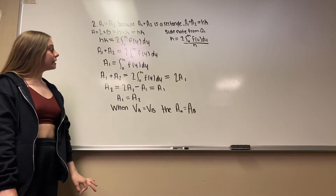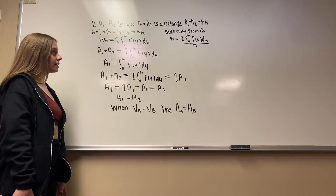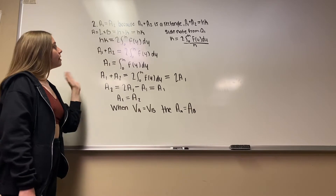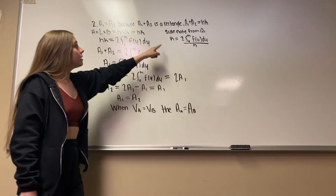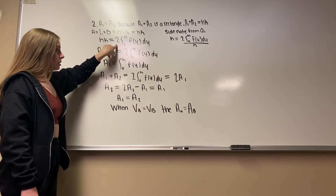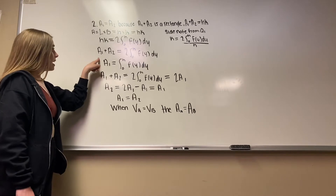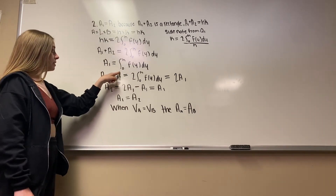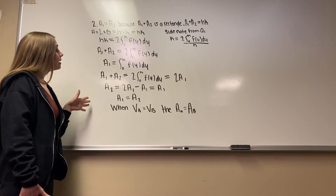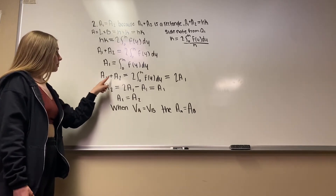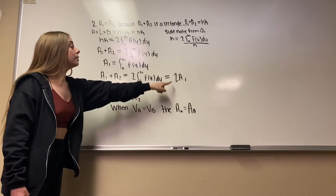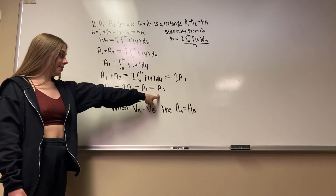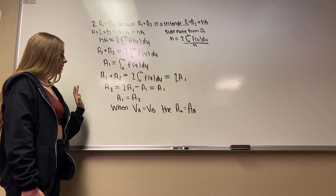For question 2, we set area 1 equal to area 2, because A1 plus A2 is a rectangle. Solving that gives H·K, because the area of a rectangle is length times base. We multiplied H back over and set that equal to the equation from question 1, giving A1 plus A2 equals 2 times the integral from 0 to H of f(y) dy. Since area 1 equals the integral from 0 to H of f(y) dy, and they're complementary, A1 plus A2 equals 2·A1, so A2 equals A1. This proves the area of cup A equals the area of cup B.